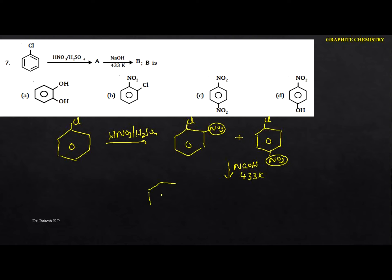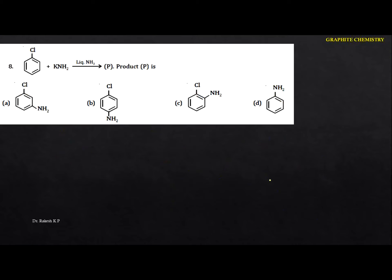With the electron-withdrawing nitro group present, nucleophilic substitution proceeds: Cl is replaced by OH. We get ortho-nitrophenol and para-nitrophenol. Since the option does not list ortho-nitrophenol, we select para-nitrophenol. The option is D.